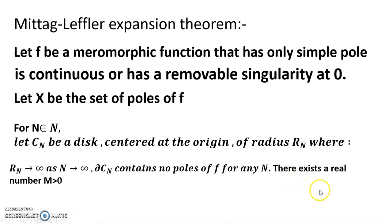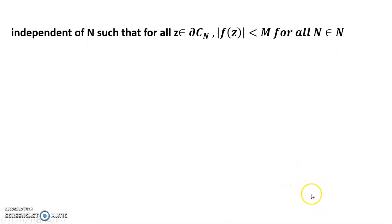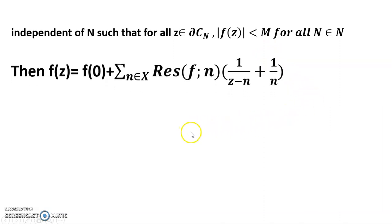There exists a real number m greater than 0, independent of N such that for all z belongs to boundary of cn, mod of f(z) less than m for all n belongs to capital N. Then f(z) equals f(0) plus summation n belongs to x, residue of f at n times (1/(z-n) + 1/n).